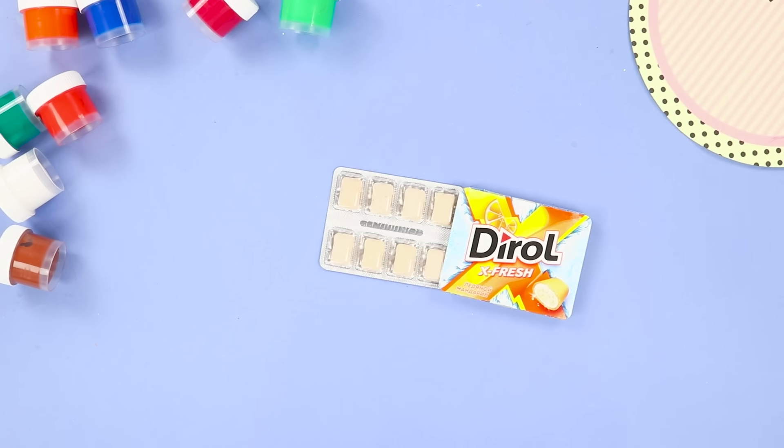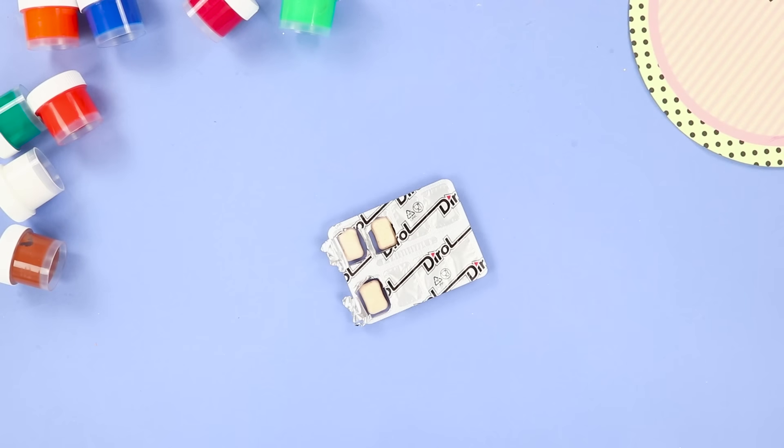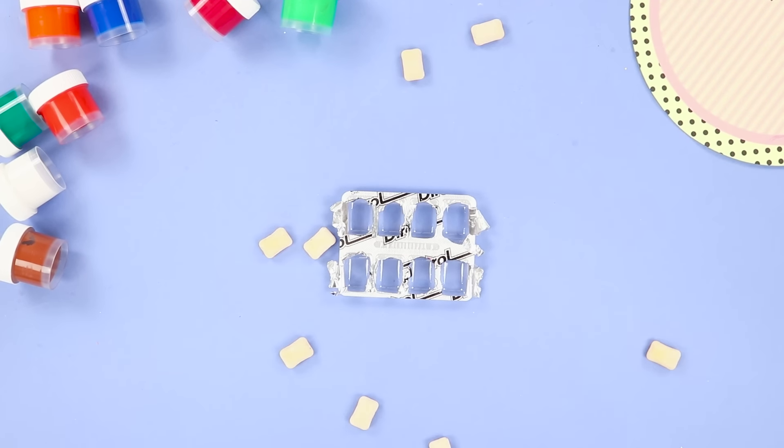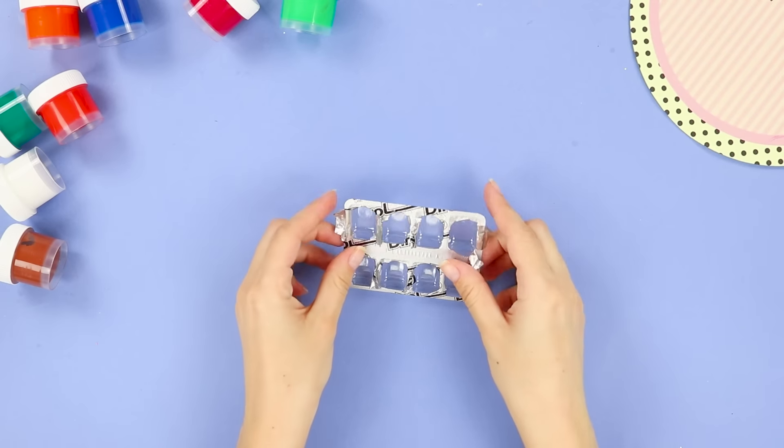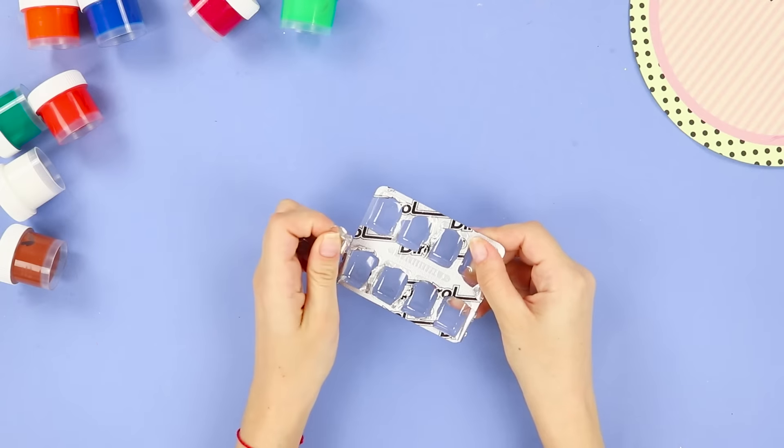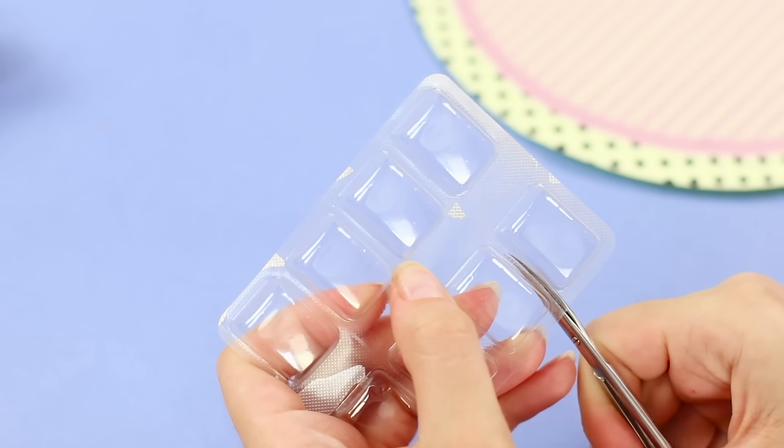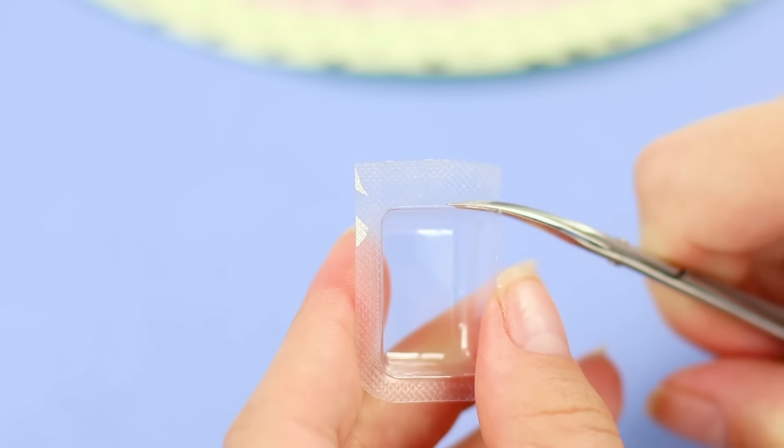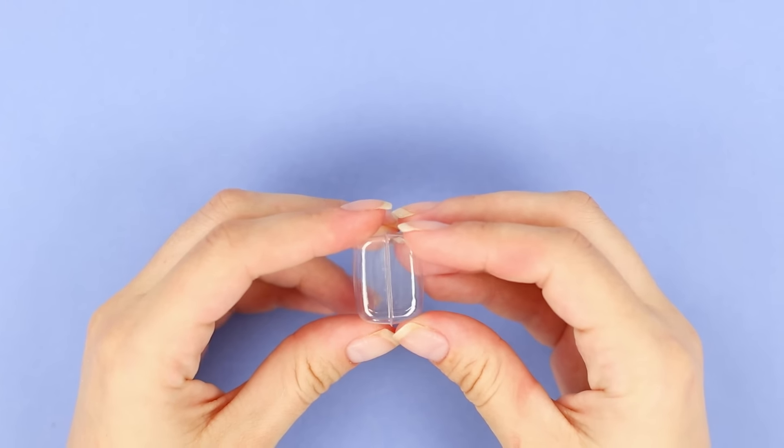Next, you need a pack of gum. Take the package out and remove the gum. Take the plastic off from the foil. Neatly cut out the cells using nail scissors.